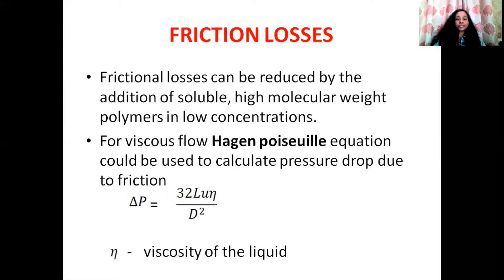We can reduce the frictional losses by adding some soluble high molecular weight polymers in low concentration into the fluid. We can also use the Hagen-Poiseuille equation to calculate the pressure drop due to friction, but this is only valid for viscous flow. We can use the fanning equation to calculate the pressure drop irrespective of the nature of flow, but the Hagen-Poiseuille equation is only valid for viscous flow.